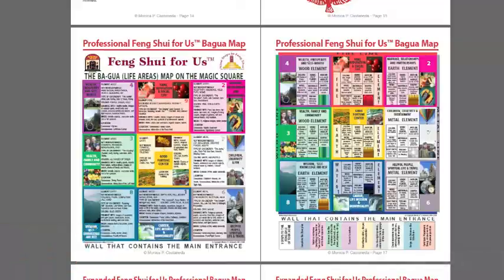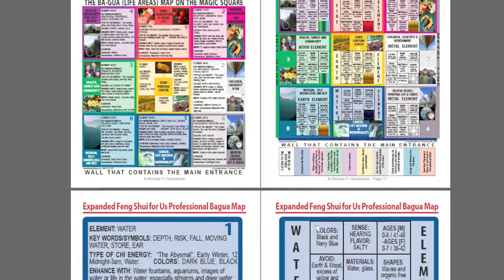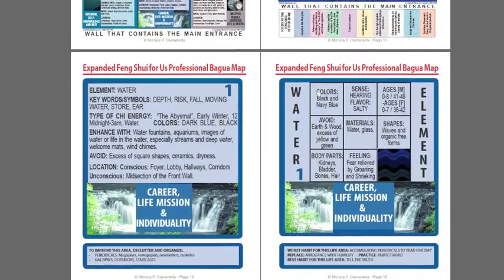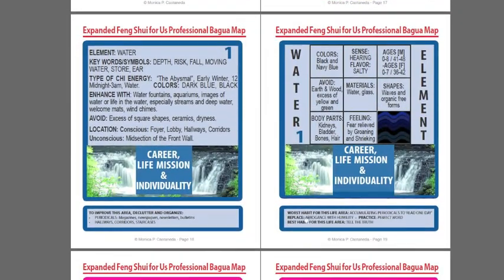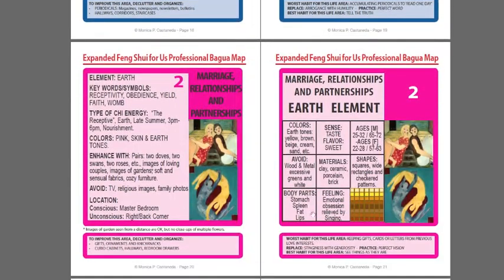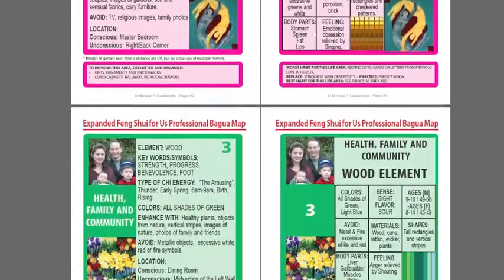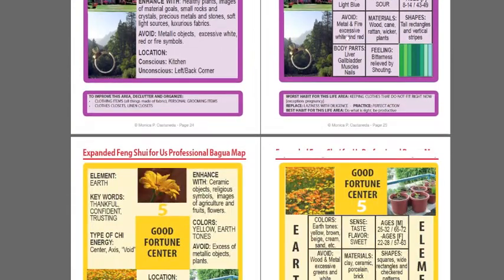You also get a copy of the professional Feng Shui for us Bagua Map, front and back. I have taken each of the squares in the Bagua Map and expanded them so that it's easier to study from these charts and easier to read and understand. You get two pages for each one of the life areas, in numerical order.